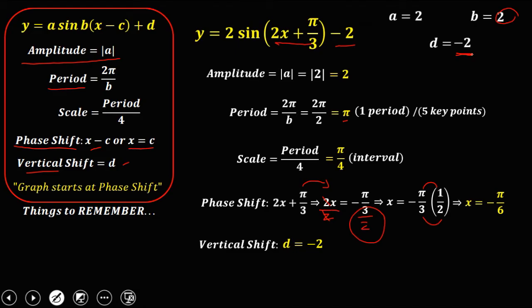Since D is negative 2, the vertical shift is negative 2, meaning the graph shifts down 2. To graph this equation, we use the amplitude, period, scale, phase shift, and vertical shift.